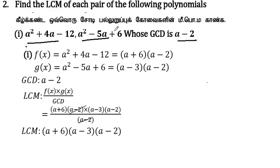This is problem 3.3. Find the LCM of each pair of the following. We know that f(x) into g(x) is equal to LCM into GCD. So we will use this to find the LCM by dividing f(x) into g(x) by the GCD.